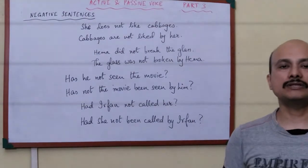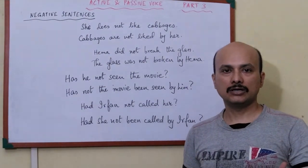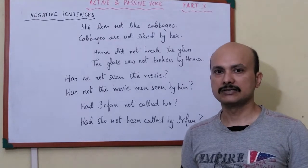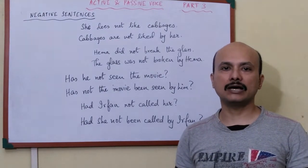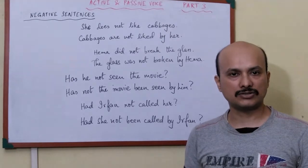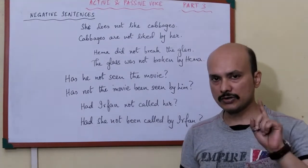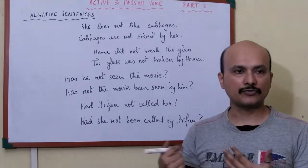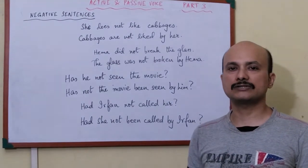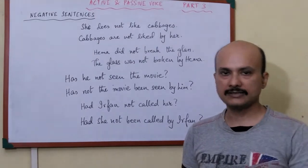The next rule is about negatives — how do we change active to passive in the case of negative sentences. A negative sentence can have a regular assertive structure or it may be an interrogative questioning sentence. So if there is a negative sentence, whether assertive or interrogative, how do we change it? Let's see.